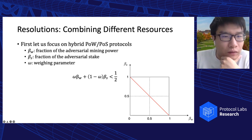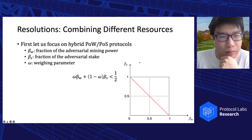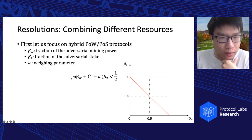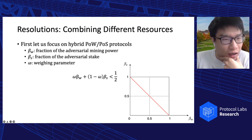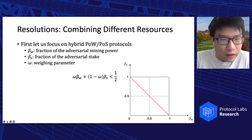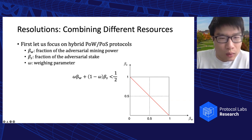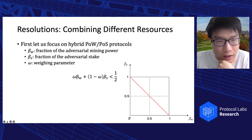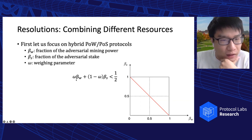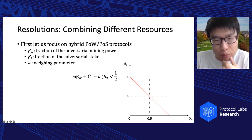In this talk, I will first focus on hybrid PoW and PoS protocols. I will use β_W as the fraction of adversarial mining power and β_S as the fraction of adversarial stake, with ω as a weighting parameter between zero and one. We want to achieve security whenever ω·β_W + (1−ω)·β_S is less than one half. This is plotted as a curve in the figure. If we change the value of ω, the slope of the curve changes, but it always passes through the center point (1/2, 1/2).